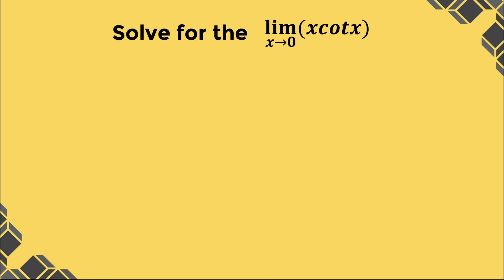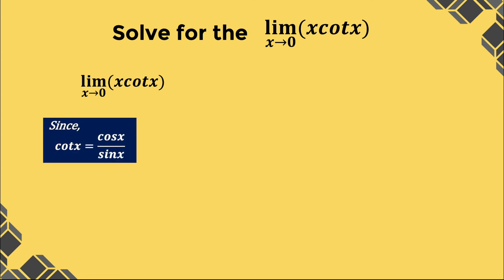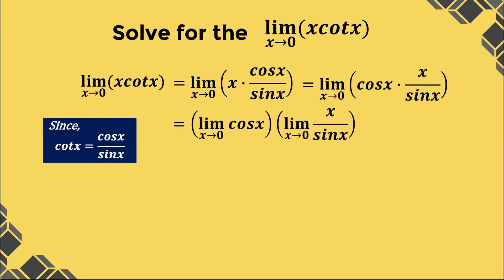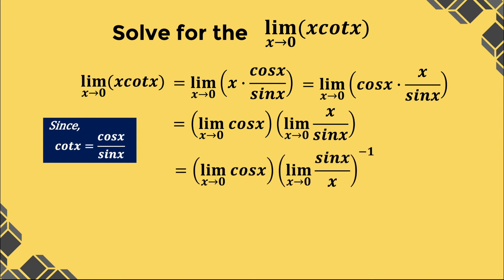Let's solve for the limit of x times cotangent x as x approaches 0. Since cotangent x is equal to cosine x over sin x, we can rewrite the given as the limit as x approaches 0 of x times cosine x over sin x, which is also equivalent to the limit of cosine x times x over sin x. Evaluating the limit separately, we have the limit of cosine x as x approaches 0, times the limit of x over sin x as x approaches 0. We can rewrite x over sin x using negative exponents to use one of the special limits. We have cosine 0 and 1 raised to negative 1 for the limit of sin x over x as x approaches 0, which is a special limit. Simplifying further, we have 1 times 1, which is equal to 1.